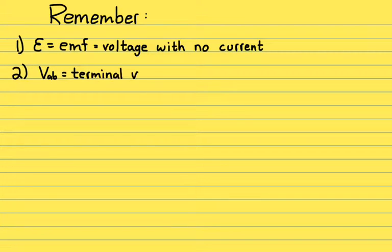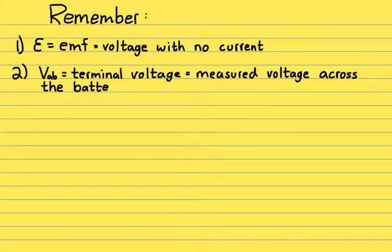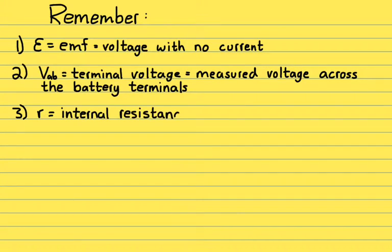Secondly, the terminal voltage is what's measured across the actual terminals of the battery. Typically we give that the symbol V subscript AB or something like that. And then third, little r represents the internal resistance of a battery. And then we have that equation to relate all of our variables together. And all that is the statement of Kirchhoff's rules.